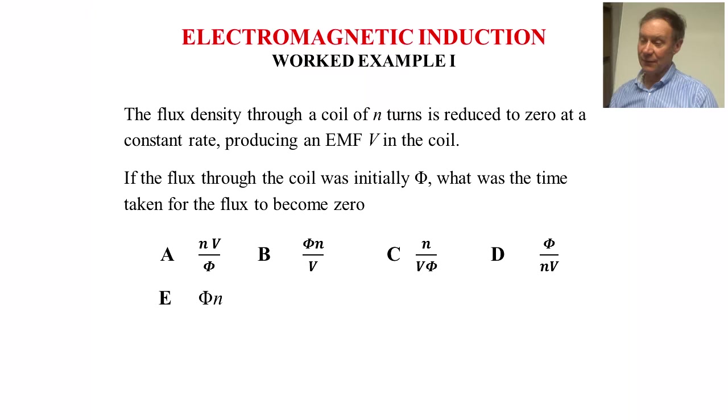So here's some simple worked examples to try. First one: if the flux density through a coil of N turns is reduced to zero at a constant rate, which is producing an EMF V in the coil, what was the time taken for this to become zero? And there's a variety of options there to choose from. If you want to try that, the tape will stop and then you can reconnect and have a look at it in a minute.